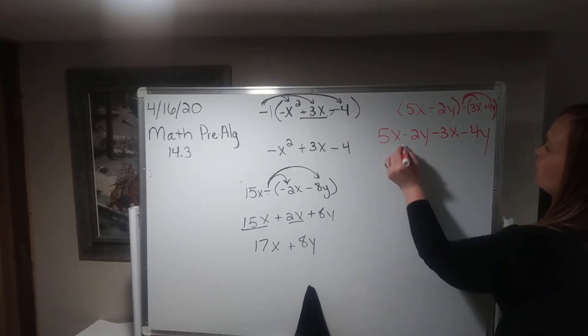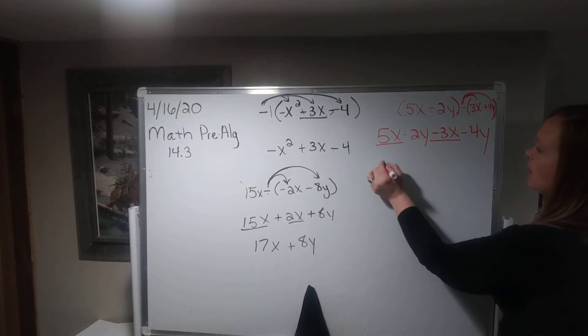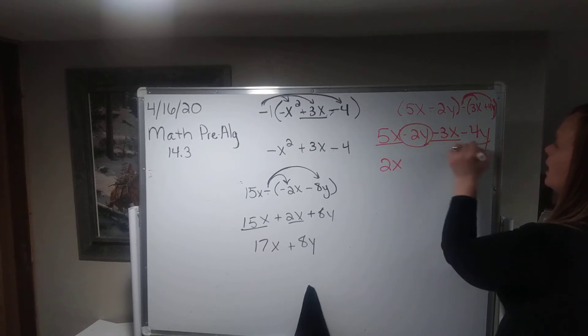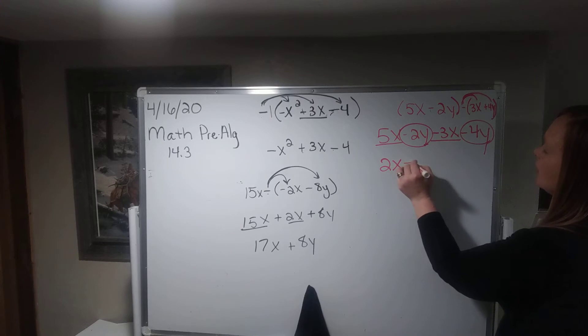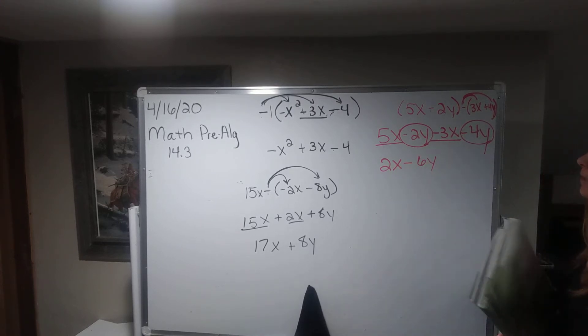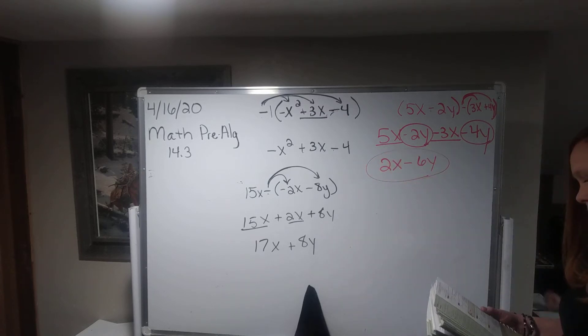Okay, so then I want to combine my like terms. So 5x and negative 3x gives me 2x, and then negative 2y and negative 4y, I'll add those and get negative 6y. Okay, so this is my answer, 2x minus 6y.